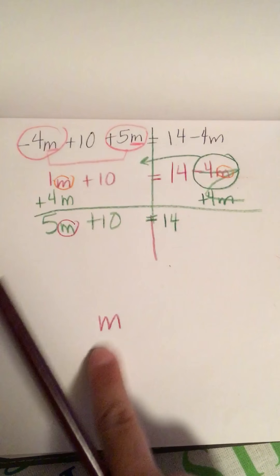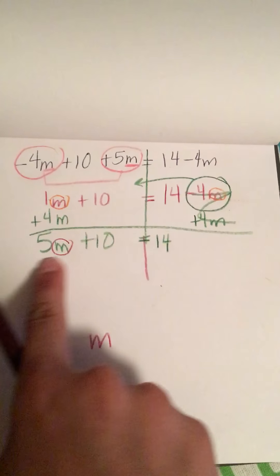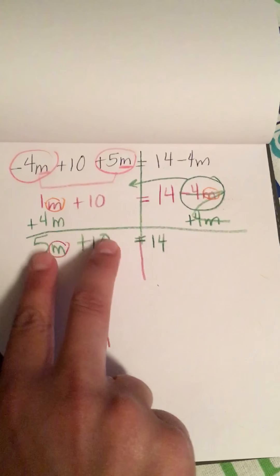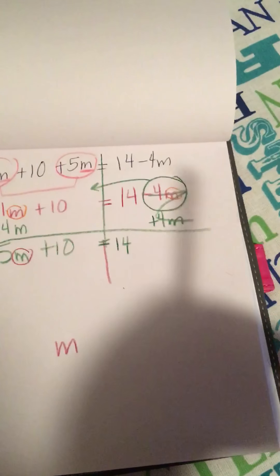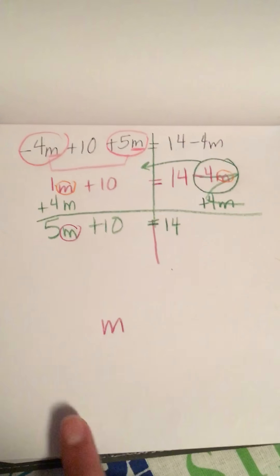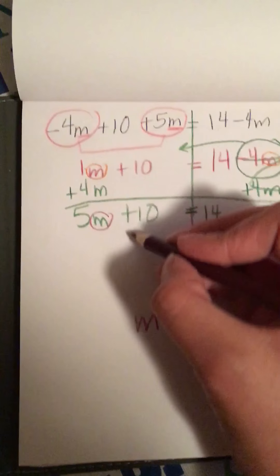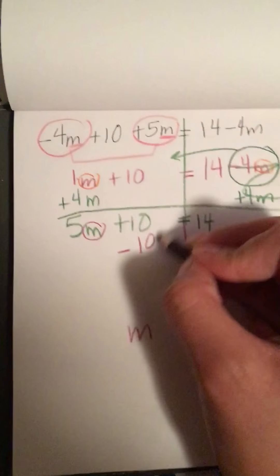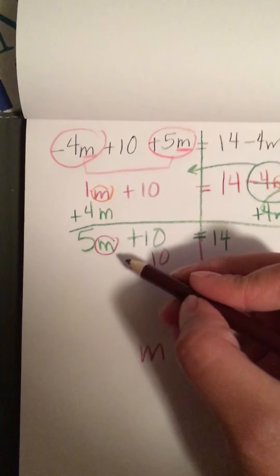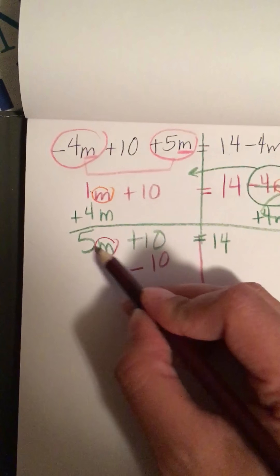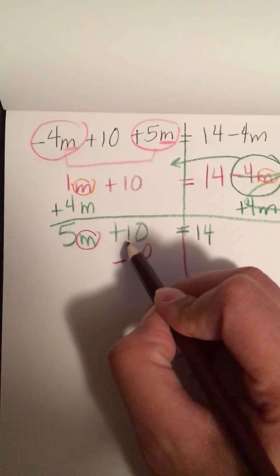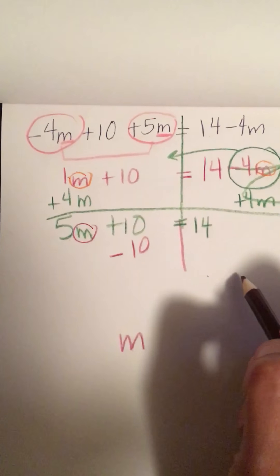That means everything that's not an M I got to move it and get rid of it to the other side so I have M by itself. So I'm going to do minus 10. Remember the other people go first, in other words the number that is not together with the letter. In this case plus 10 moves to the other side first, so minus 10 minus 10. This is a 0. 5M equals 4.